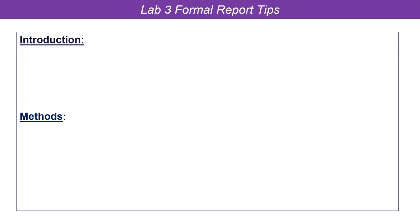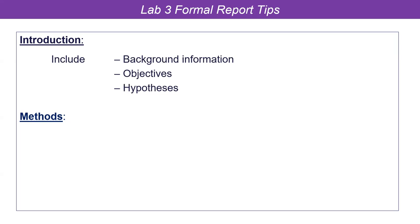I want to talk today about introduction, methods, and a couple of other things. The introduction — hopefully everybody knows this from your first assignment — should include the background information, the objectives, and your hypotheses. Write this all in paragraph form, not one big long paragraph. You want to have multiple paragraphs covering membranes, deep roots, data, the relevance of the pigment, and then your hypotheses.